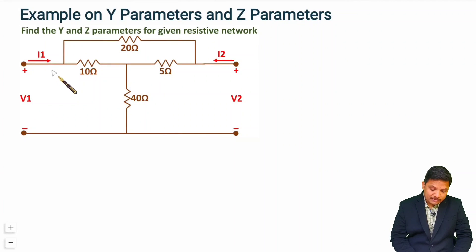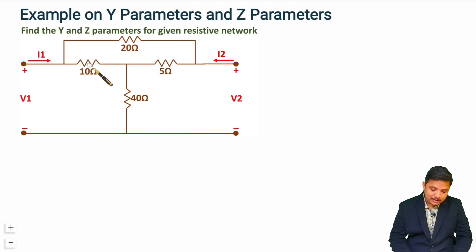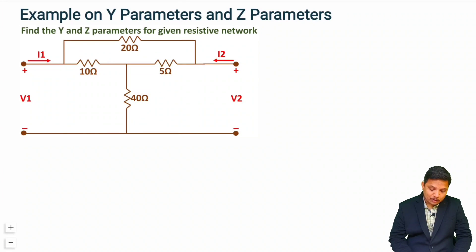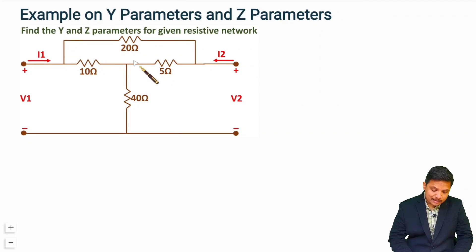First we need to see whether the given network is a simple T or pi network. This is not a simple T network, but if you observe it you can see a delta is forming. If we convert this delta into a star, we can get a simple T network. Alternatively, there is a simple T visible which we could convert into a delta to get a pi network. We will choose the delta-to-star conversion.